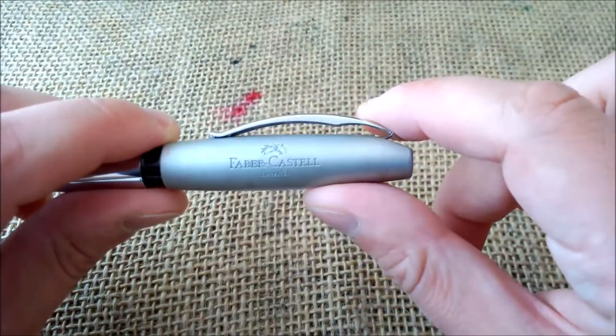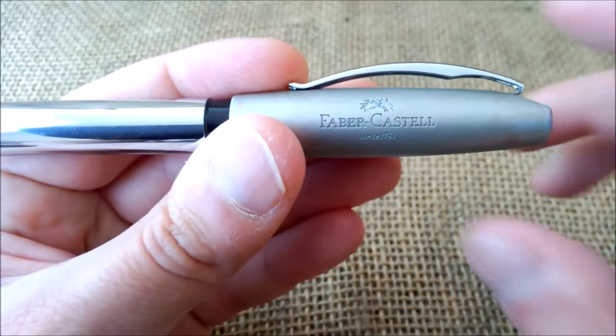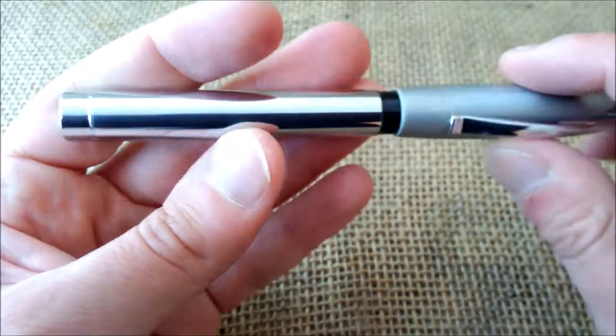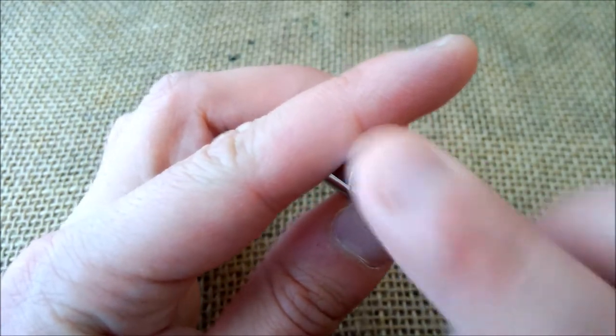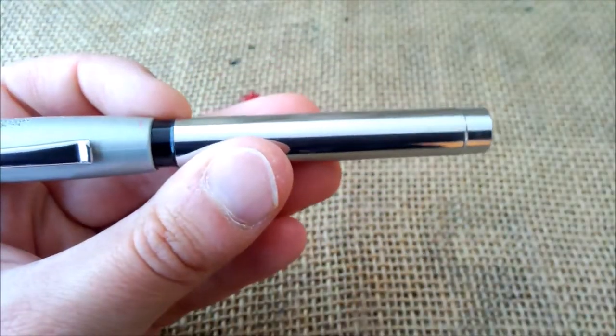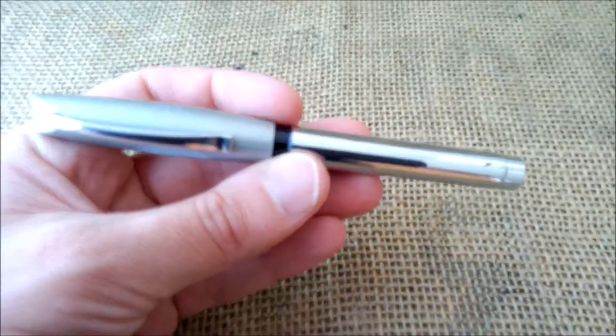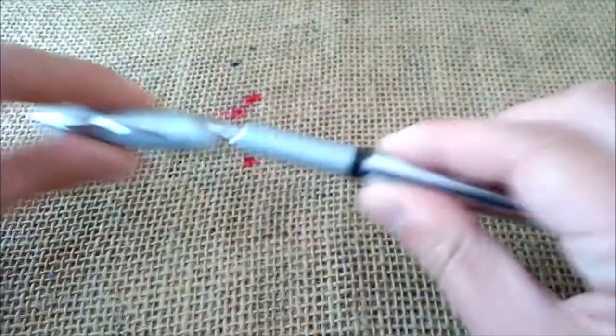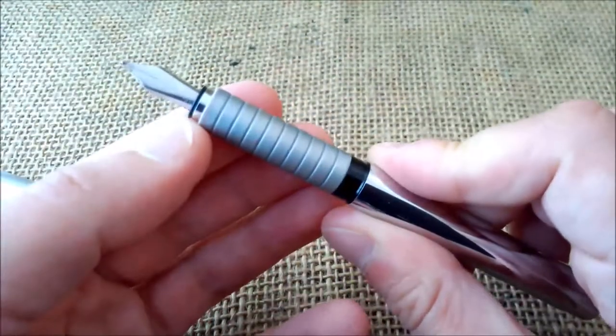On the side of the cap we have Faber-Castell since 1761. On the bottom of the barrel we have this depression which is quite nice to touch. The pen feels very back heavy because the barrel is made of metal, very heavy. When you open the pen it just slips off, the cap clicks in place here on this ring.